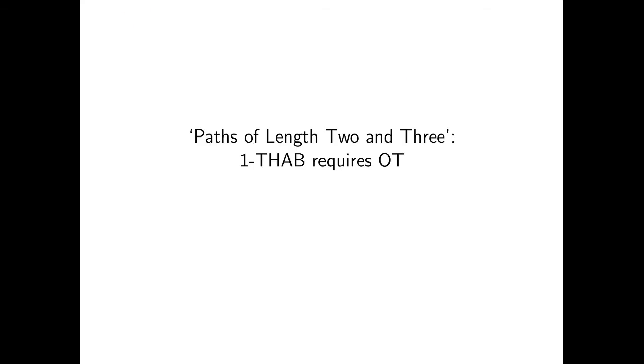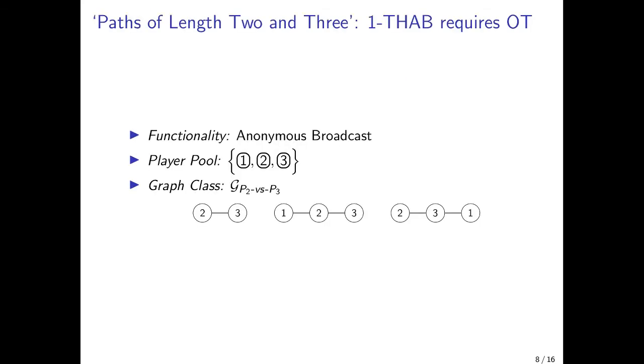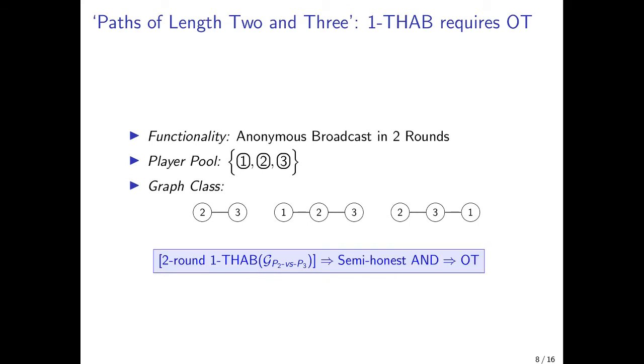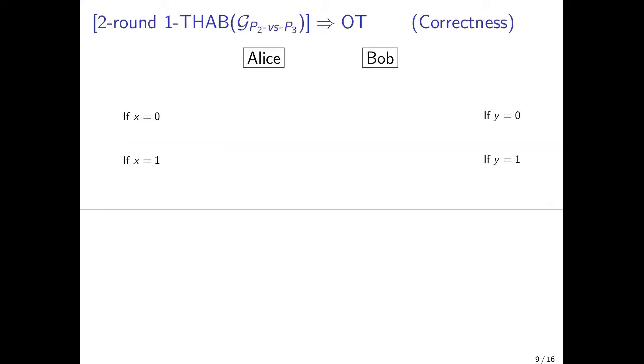Let's now show our first result, the oblivious transfer lower bound. This is our setting. We'd like to show that topology-hiding anonymous broadcast on this class of paths of length 2 and 3 requires OT. And we'll actually start by showing something simpler: that if you can do such an anonymous broadcast in two rounds only, then you get OT. We'll show it by taking such a protocol and explicitly constructing a two-party semi-honest AND functionality from it, which in turn implies OT. This is the setting for the two-party AND. Two players, Alice and Bob, hold inputs X and Y, and they'd like to compute the AND of their inputs.